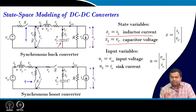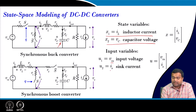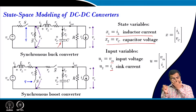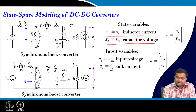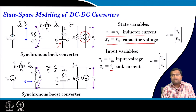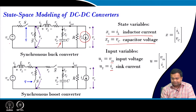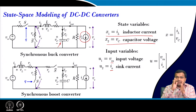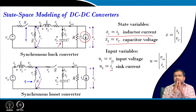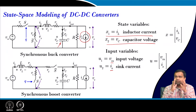We are taking two state variables which are continuous, because inductor current cannot change immediately, neither can capacitor voltage. We are considering input variables which are the input voltage as well as the external load sink current. There will be one more input variable which is a timing parameter — the duty ratio — but since we are initially starting with an open loop system, we are not considering the control variable at this point.